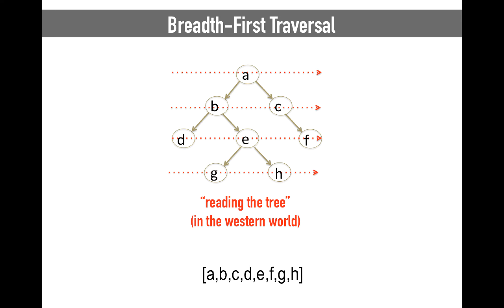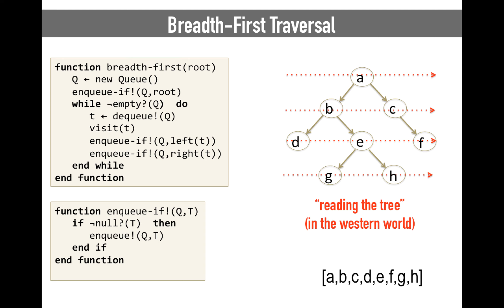In the implementation I'm going to show you, which is exactly the same that Christoph showed in his slides, we are going to use a queue to remember the parents so we can go through the children. So this is the code. The first thing I have to explain is that in the code we use a function called enqueueIf. EnqueueIf is very simple — it basically says that in the queue, you are going to enqueue an element only if that element is different from null. If the element is null, we don't enqueue it.